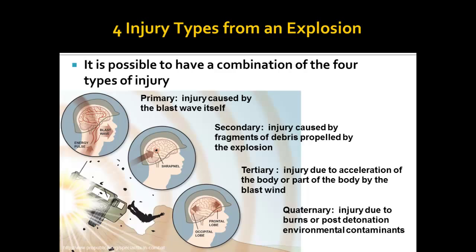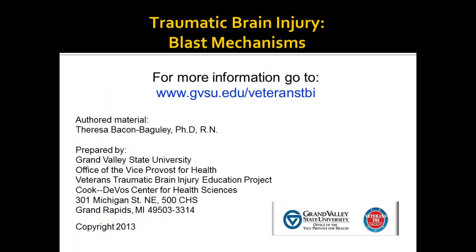Burns are extremely common after being exposed to an explosion based on the extreme heat generated during the event. It is possible to have a combination of the four types of injury. For example, an individual may have a primary injury along with second or third degree burns, which are defined as the quaternary injury. This is the end of the module on traumatic brain injury and the blast mechanisms causing that injury.